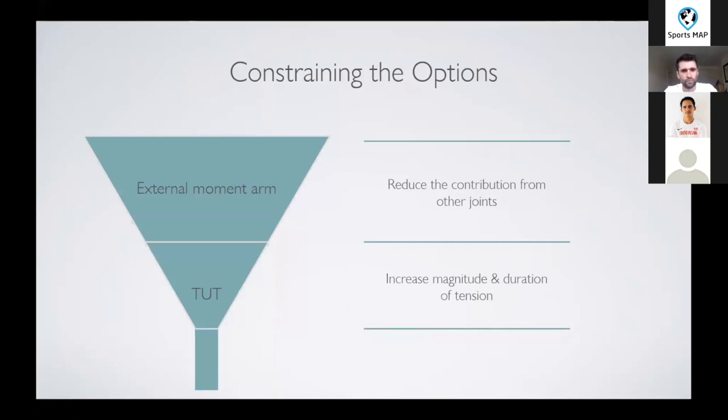In some of those more proximal muscles where there's a lot of synergistic competition, that's particularly important to consider the internal moment arm as well. But for some muscles, like maybe the vastus or the soleus, there's not too much competition. So the main things to consider really are the external moment arm and the time under tension.